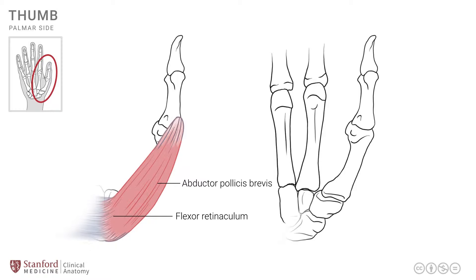The abductor pollicis brevis attaches distally at the base of the proximal phalanx as shown in the diagram and is innervated by the median nerve.